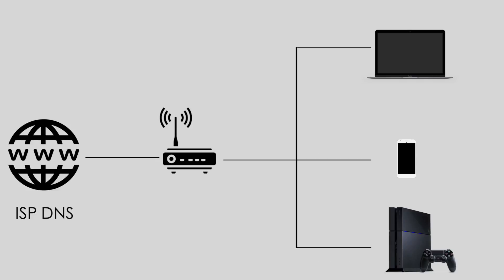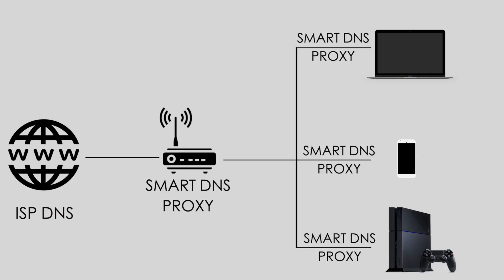Now here is the thing: if you change your DNS server on your router — say to SmartDNS Proxy — then every device connected to your router will automatically start using that DNS. However, if on top of that you change the DNS server on one specific computer to Google DNS, then only that computer will override the router's DNS and use the one you entered. Now with that out of the way, let's see how you can check the DNS server on different devices.